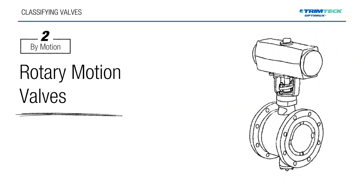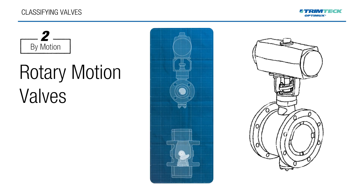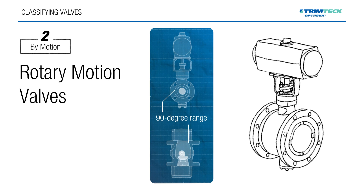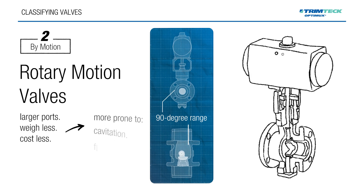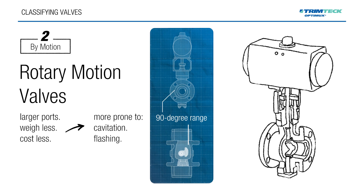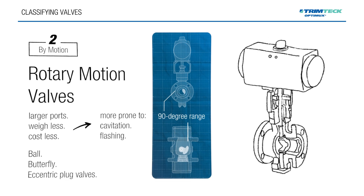Rotary motion valves use a closure element that rotates, usually within a 90-degree range. Compared to linear valves, they often have larger ports, weigh less and cost less, but they can be more prone to cavitation and flashing under high-pressure drop conditions. Common rotary valves include ball, butterfly, and eccentric plug valves.